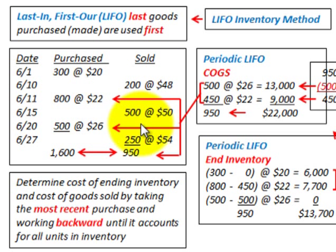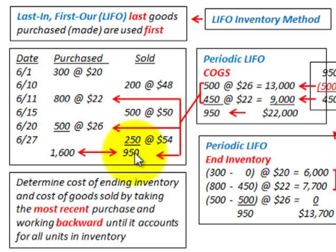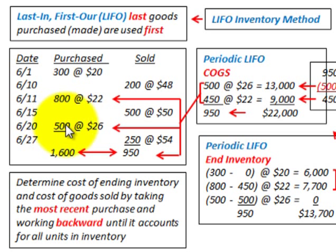With periodic LIFO, we look at the total number of sales — 950 units — and charge off inventory starting with the most recent purchases first, since this is last in, first out. We would first look at those 500 units purchased most recently, and then the remaining amount would come from the next most recent purchases of 800 units.